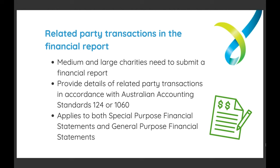For medium and large charities, they need to provide details of related party transactions in their financial statements in accordance with the requirements of AASB 124 or 1060, whether they prepare special purpose or general purpose financial statements. More technical details are available on our website, and charities can also talk to their accountant, reviewer or auditor for more information. More guidance is also available on the AASB website.